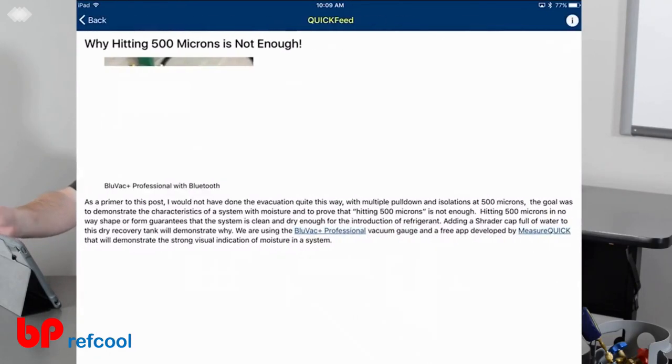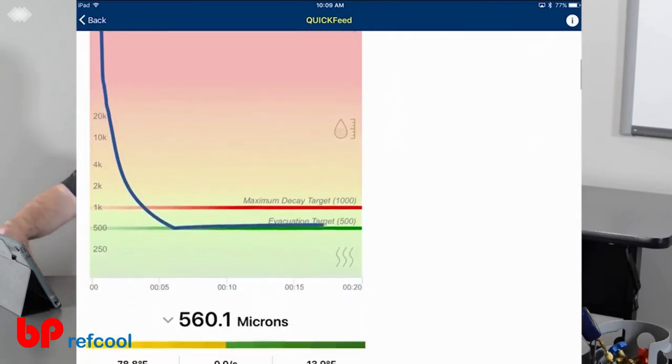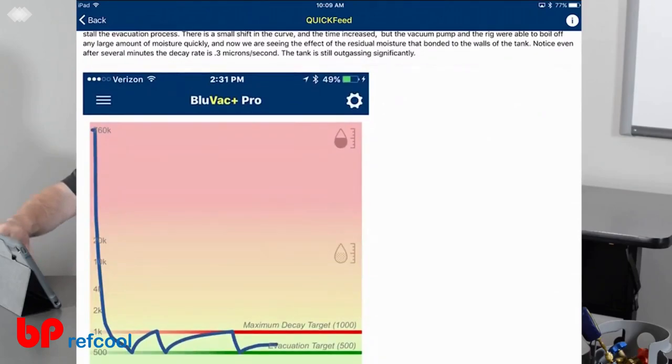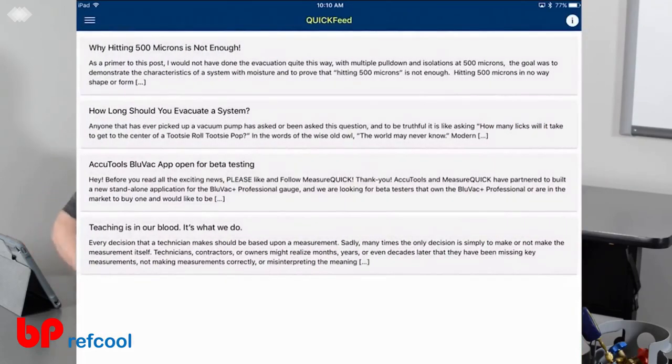Including our quick feed, the quick feed pulls in data from our articles and our blogs we've written. You can go ahead and see why 500 microns isn't enough. It'll walk you through different stages of vacuum and decay and what this all means if you want to study a little bit more about what the Bluvac does.